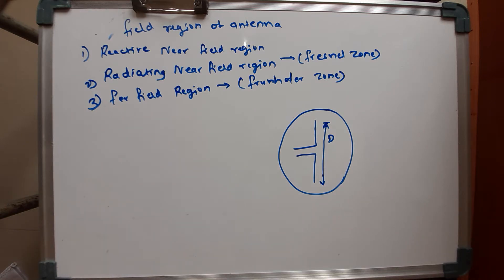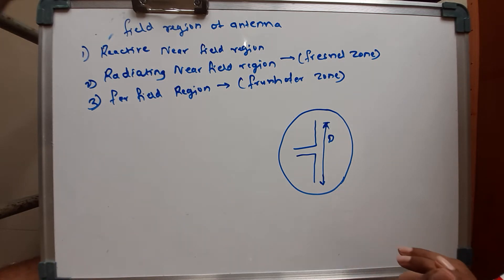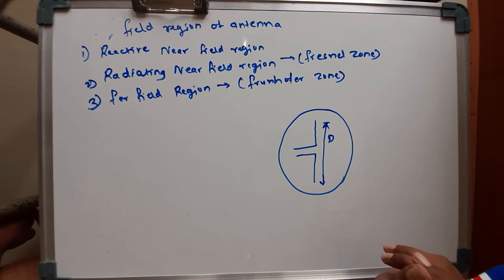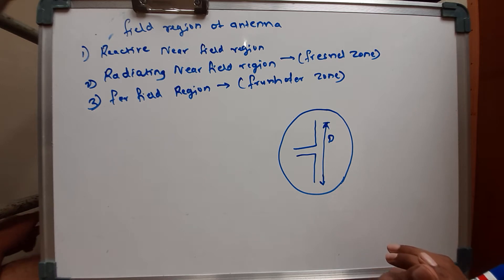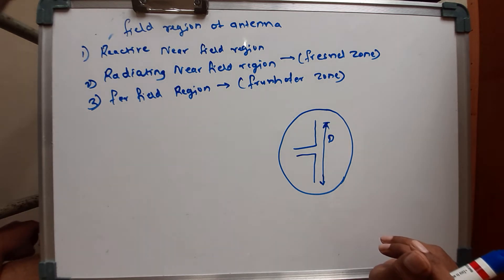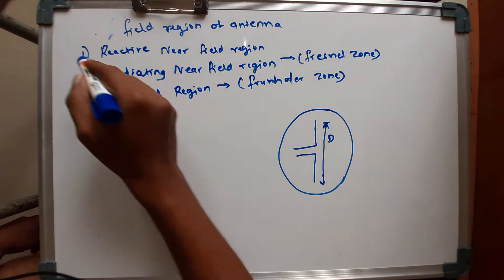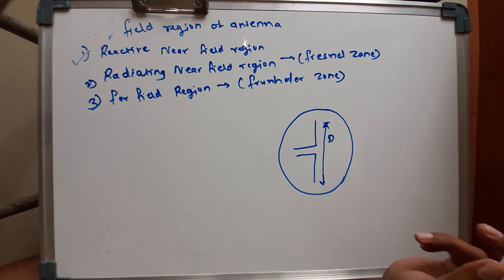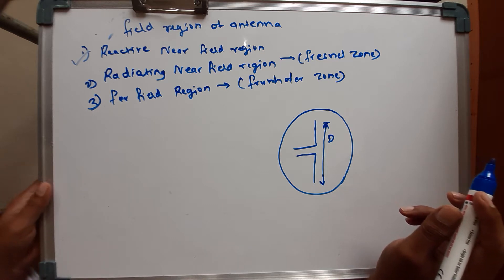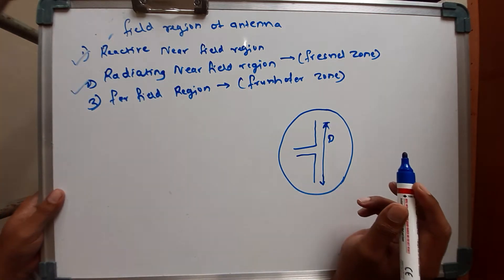Hello students, welcome to our second lecture of antenna, microwave and radar engineering. Today our topic is field regions of antenna. In this lecture we will see the different types of field regions, their definitions, equations, and graphs. There are three types of field regions: first is the reactive near field region, second is the radiating near field region which we also call the Fresnel zone, and the third is the far field region, also called the Fraunhofer zone.